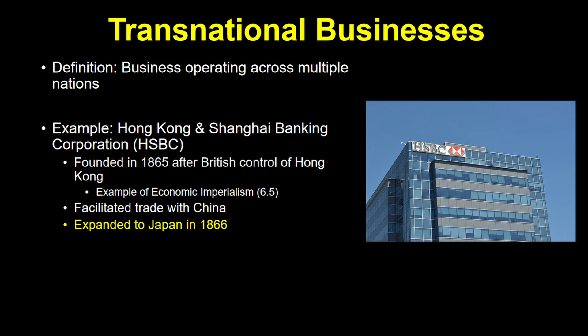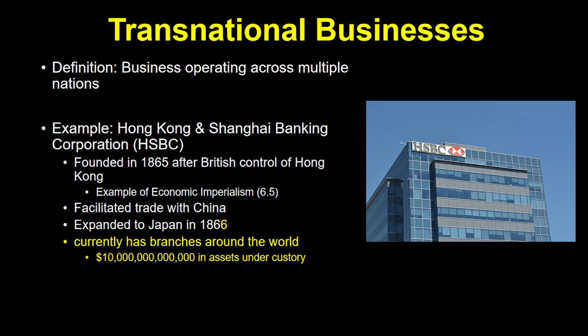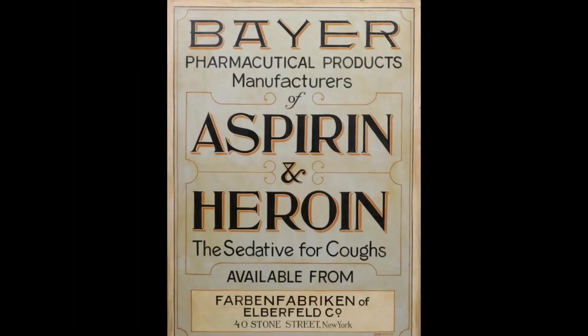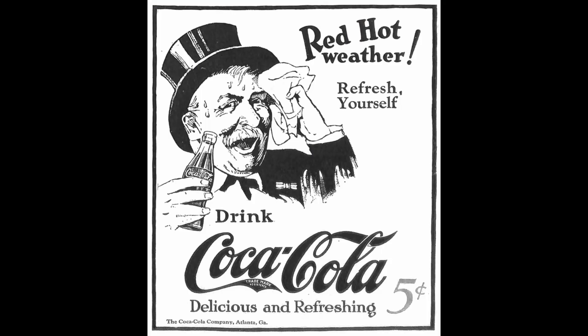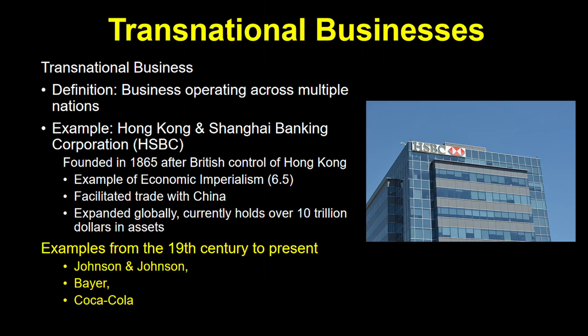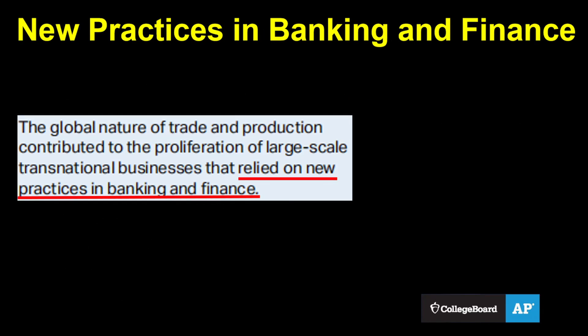HSBC opened a branch in Yokohama, Japan the following year, and eventually had branches all over the world — it currently has over $10 trillion in assets under custody. Johnson & Johnson, Bayer, and Coca-Cola are all good examples of multinational corporations that began in the 19th century and still exist today. We now live in a world dominated by multinational corporations. As these companies grew more complex and sophisticated, they relied on new practices in banking and finance.